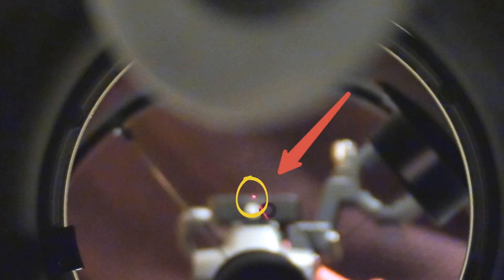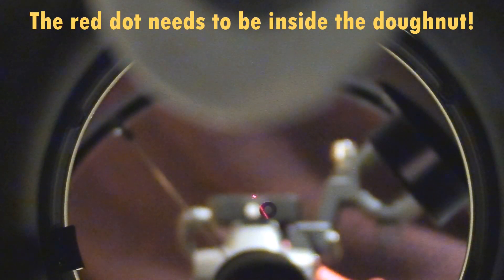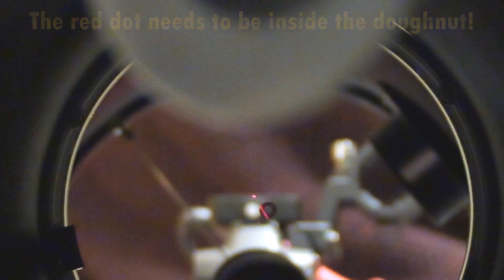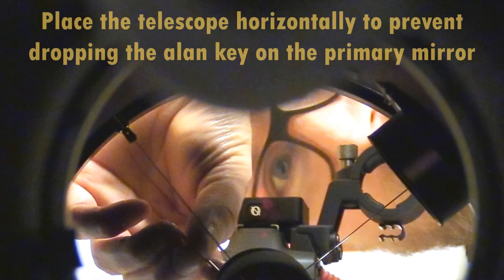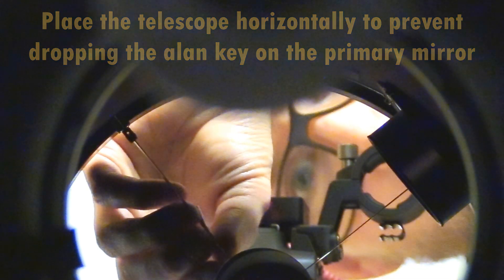Now we need to make adjustments to the secondary holder screws, but you don't want to make big adjustments. You just want to make small adjustments with an Allen key. So I'm just very slightly undoing one screw and tightening another by the same amount, but I'm only doing it like one-sixteenth of a turn and then seeing what happens to that red dot—whether it gets closer to the circle or not. If it goes further away, I'll try a different screw.